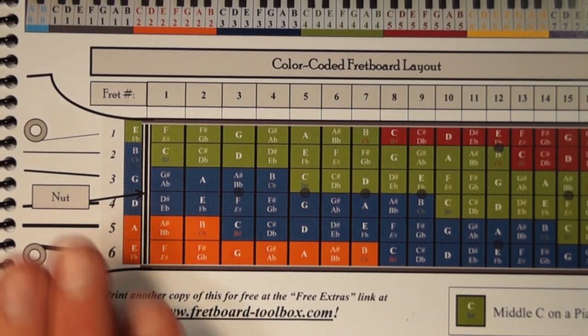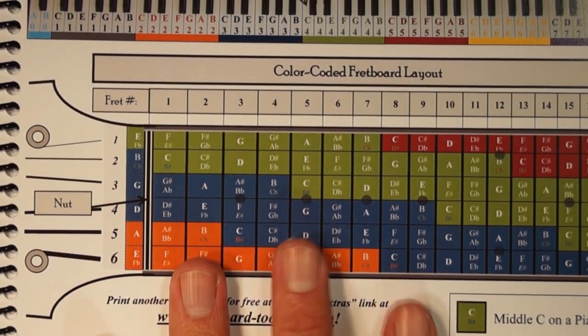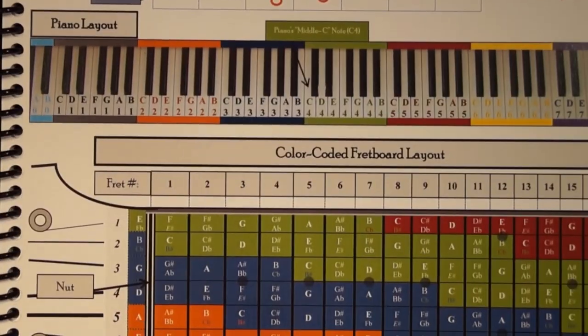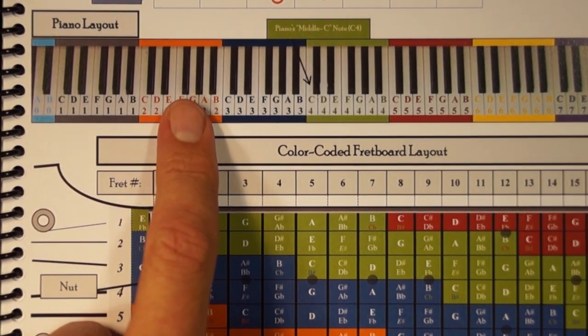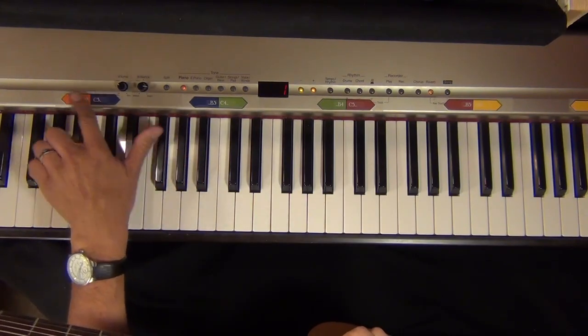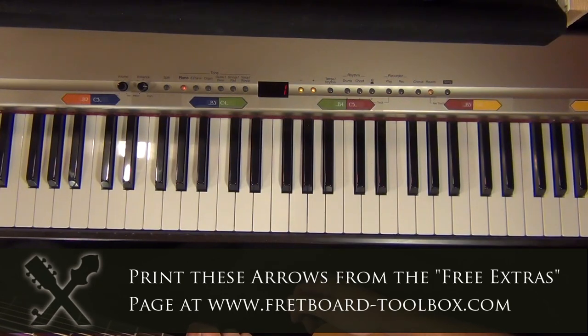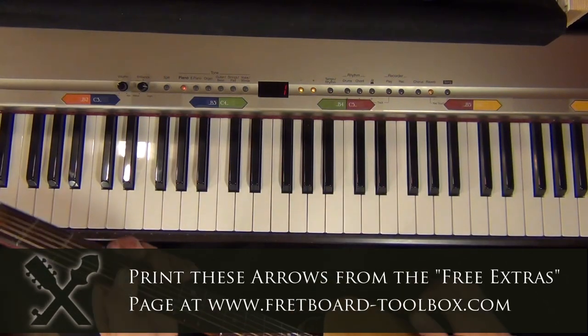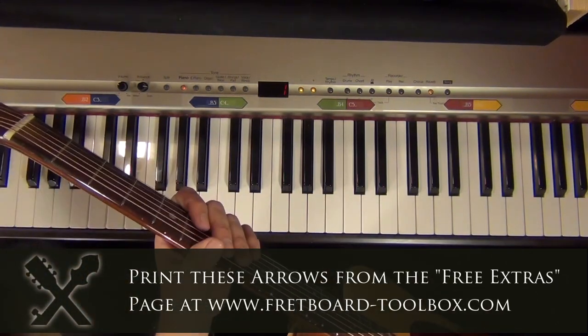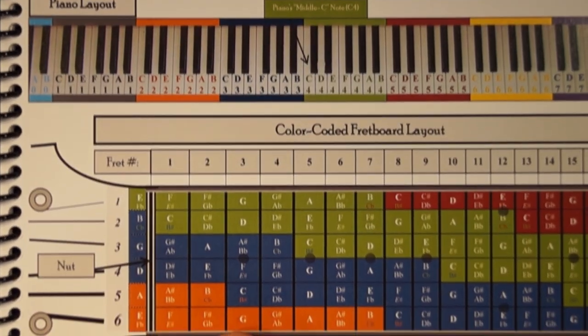Then if you look down on this color-coded fretboard layout, you're going to see that all these various colors match up with the octaves here. On the piano, I made some colored arrows so that I could see which octave I was playing in, because I wanted to see how all these notes up and down the guitar fretboard related to what's going on here.